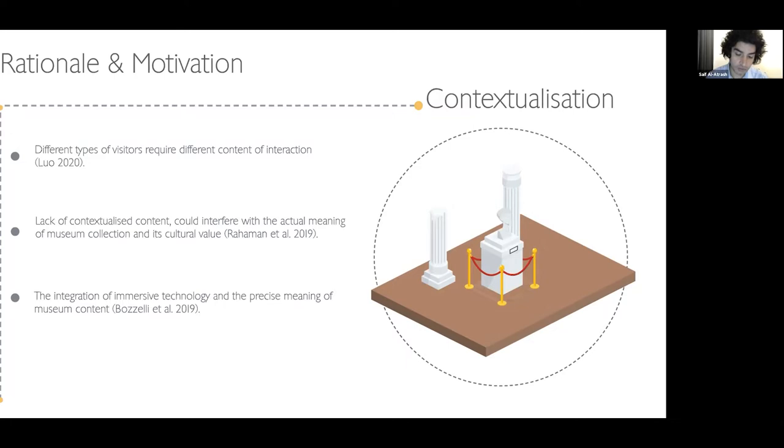We know that museums are not only a place for displaying artifacts and objects, but also a place that contains a wide range of knowledge. Because different visitors require different types of interaction and different ways of understanding things, the lack of contextualization could interfere with the actual meaning, and that's why interpretation is very important here - how we can deliver the precise meaning.